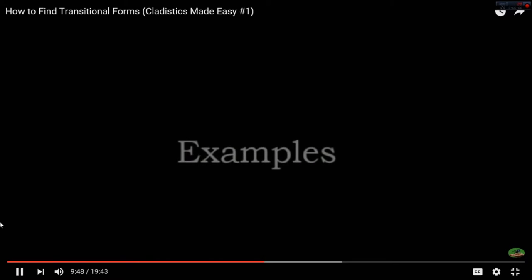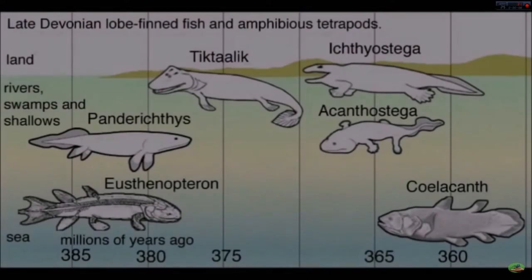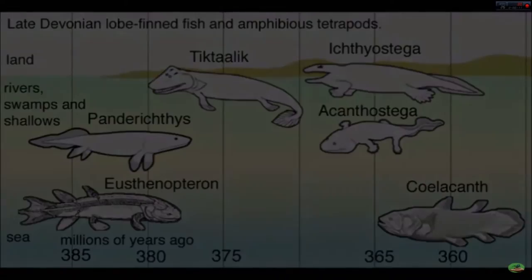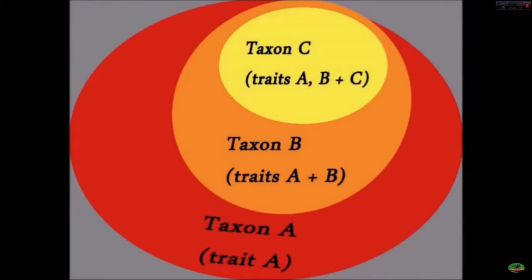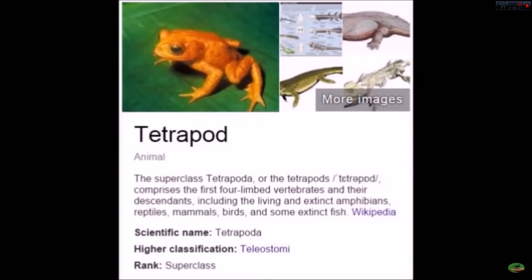With this definition of the cladistic method, let's run through some examples so you can see how to apply it and find some transitionals yourself to show creationists when they demand some. Suppose we wanted to find out how land tetrapods came about using cladistics. We can go through the general cladistic definition and replace each variable with the creatures that fit the criteria of traits that we set. We know that tetrapods are chordates with calcified bones that have a lobe-limbed skeleton design, lungs for respiration, and four developed limbs with which they use to support their own body weight.